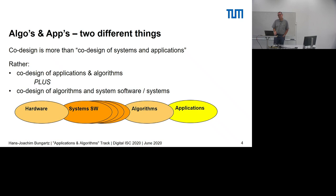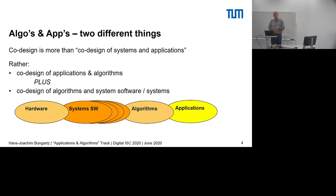It's important to keep in mind that algorithms and applications are two different things. A couple of years ago people frequently spoke of co-design of systems and applications, but I believe what we really need is co-design of applications and algorithms — how algorithms can be best tuned and tailored to specific applications, and also co-design of algorithms with the full software stack and systems.